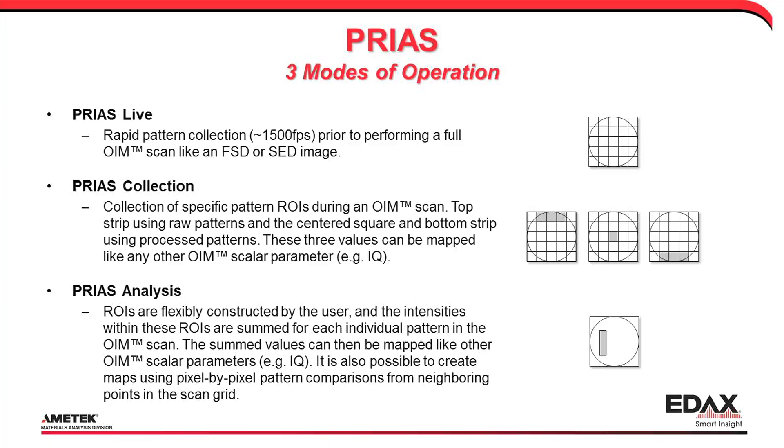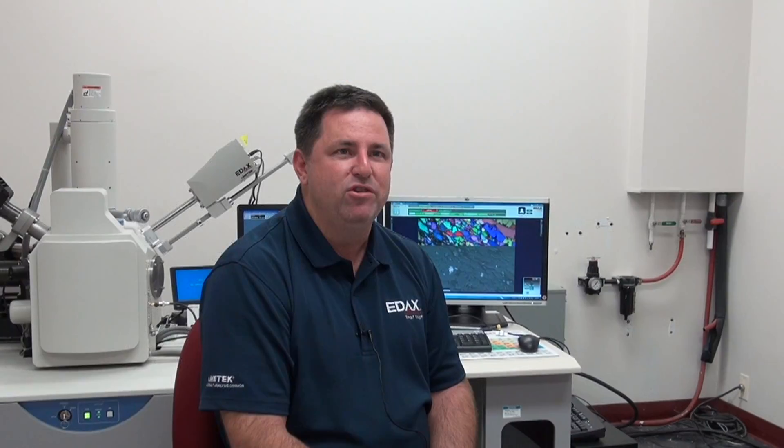PRIUS Collection automatically collects data from three detector regions of interest during EBSD mapping operations. These imaging channels are then available for subsequent viewing and correlation with measured orientation and phase information.